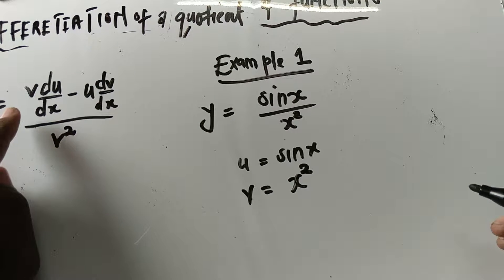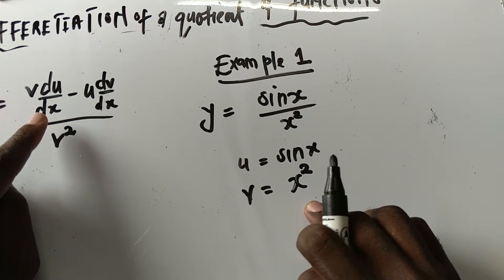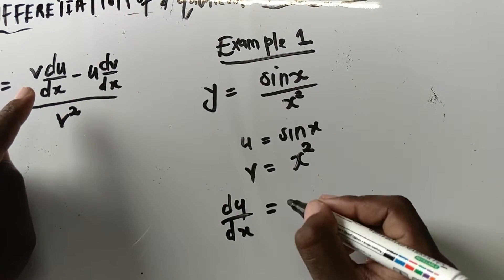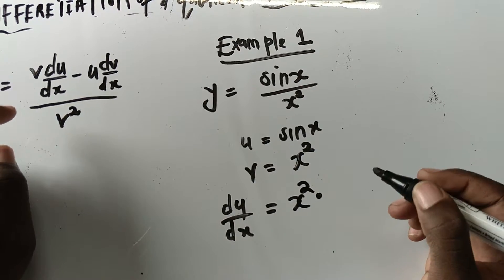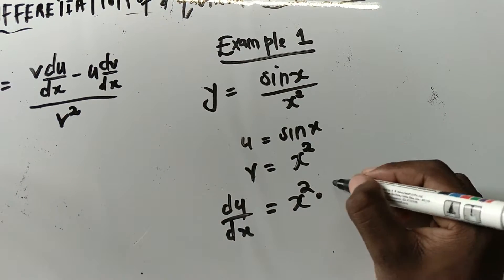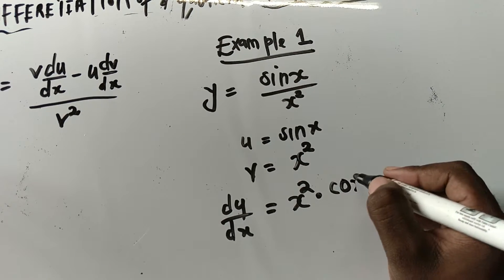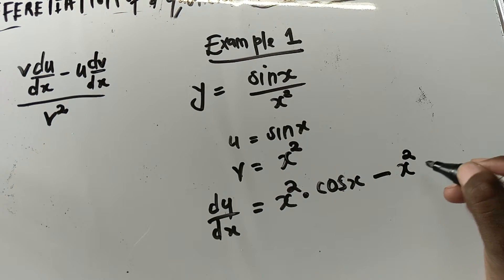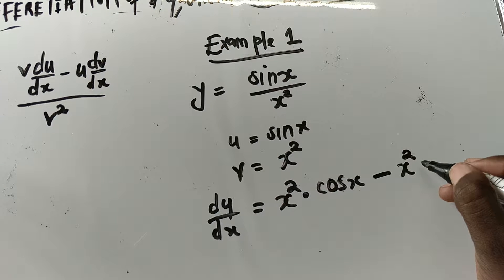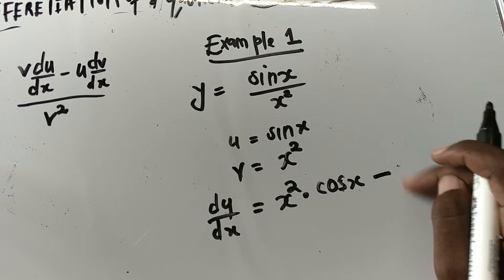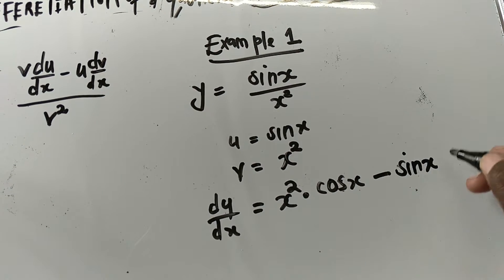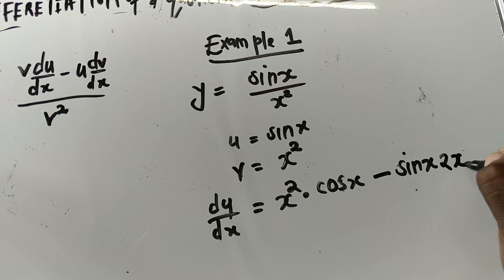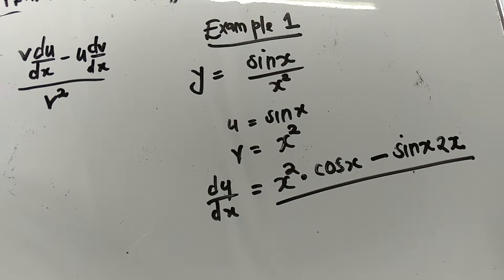We follow the formula: keeping v constant multiplied by differentiating u with respect to x. So dy/dx equals x squared — keeping that constant — multiplied by differentiating sin(x), which gives cos(x), minus keeping u constant, which is sin(x), then differentiating v. When we differentiate x squared we get 2x. All of this divided by v squared, which is x squared to the power of 2.